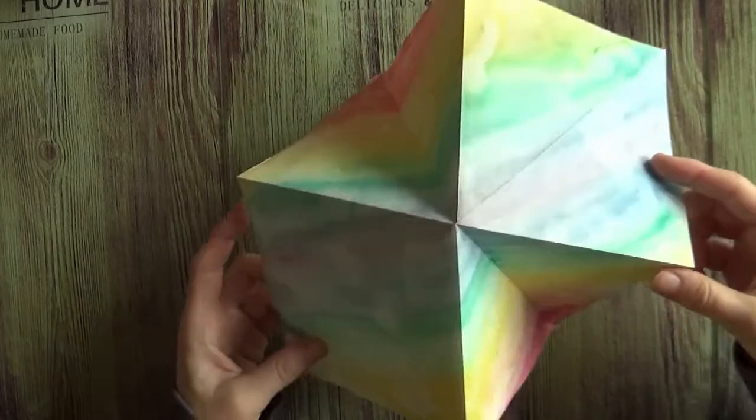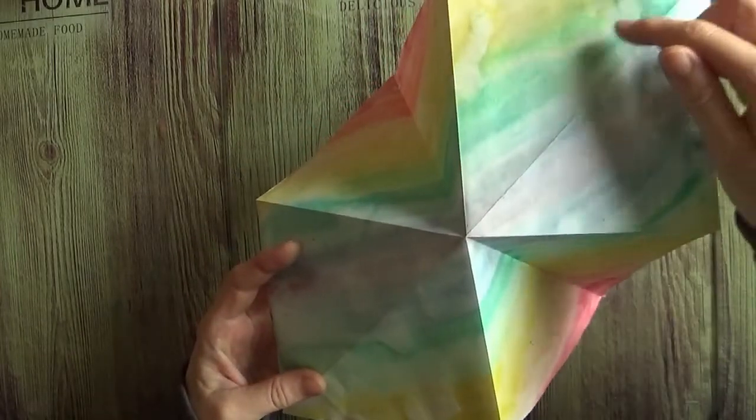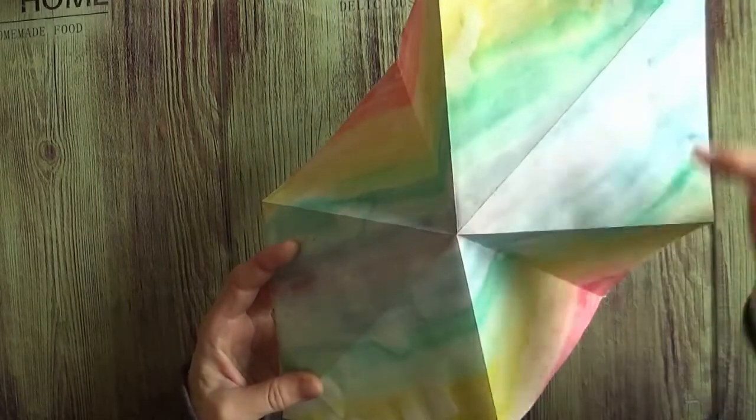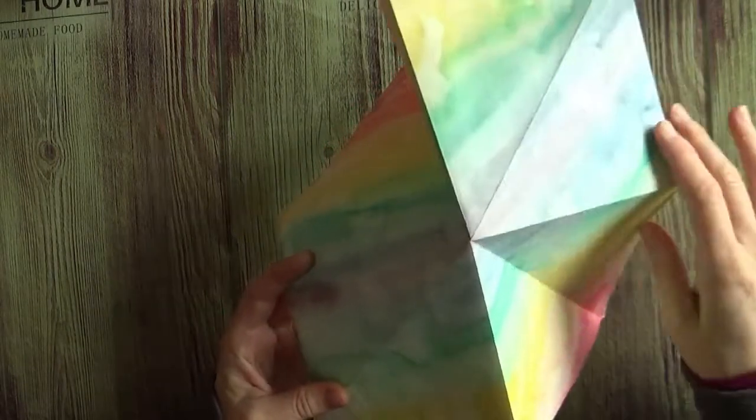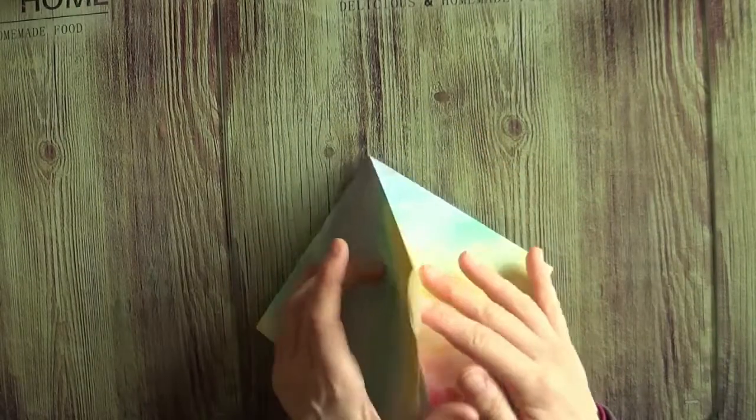And fold it together because we creased one diagonal on the right side and the other one on the wrong side. It will just fold itself into this shape.